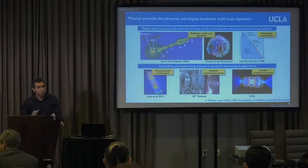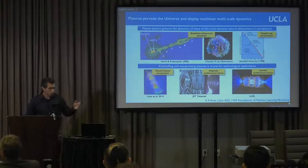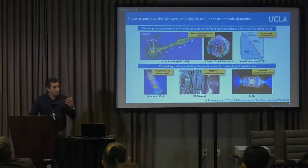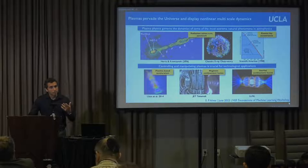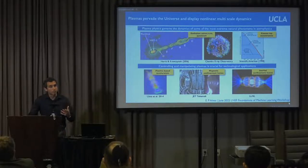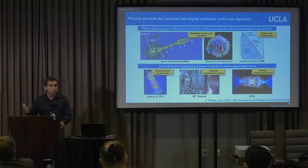Let me remind some of you what plasmas are and what some of the exciting questions in plasma physics are. Plasmas are ionized gases — hot ionized gases of charged particles, of electrons and ions — and they interact collectively through electric and magnetic fields. This state of matter pervades the universe; in fact, it makes up most of the observable universe.